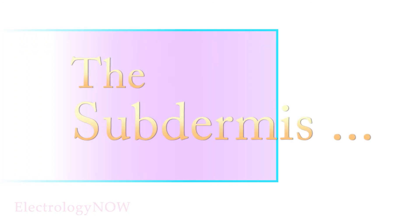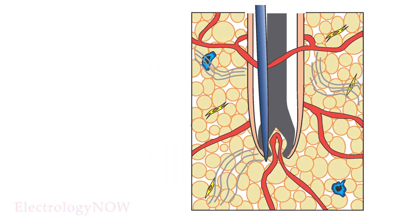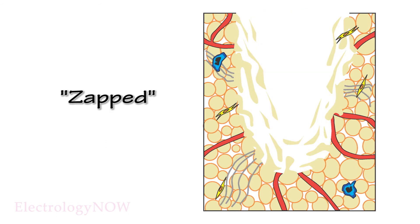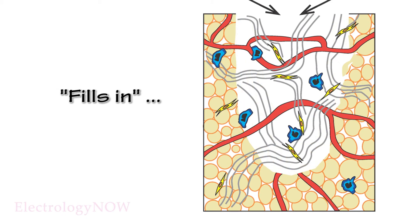The subdermis is also called the hypodermis or the subcutaneous layer, but the term subdermis is mostly used today. With nearly all medium to large terminal hairs, your insertion is deep and goes all the way down to the subdermis. Your treatment causes most of the damage deep in the skin, targeting the papilla and the lower two-thirds of the follicle. The subdermis heals identically to the dermis — it fills in with collagen and fat cells, nothing remarkable.